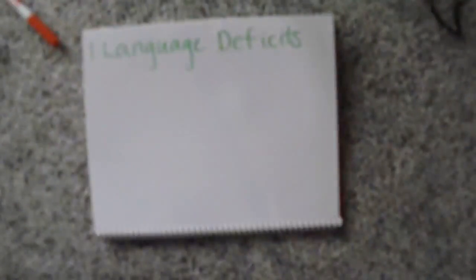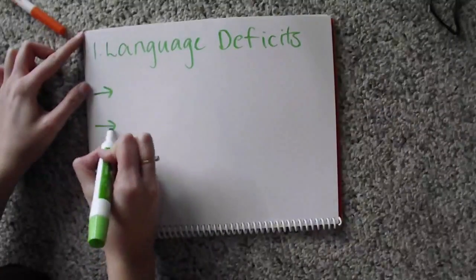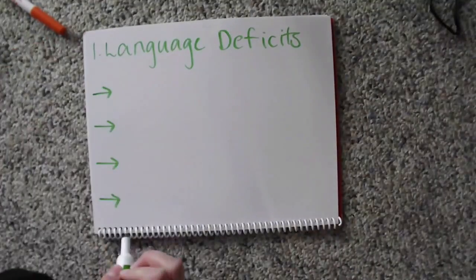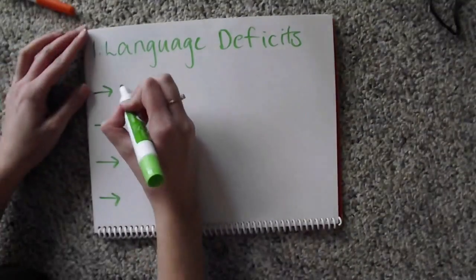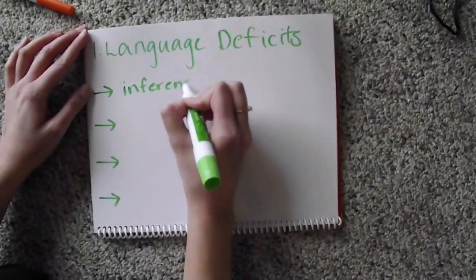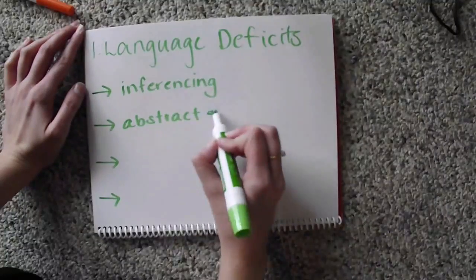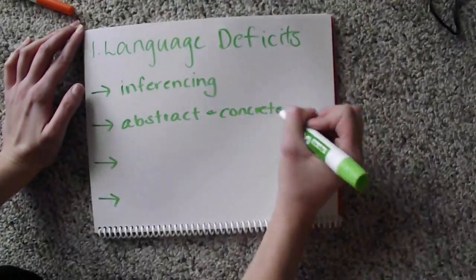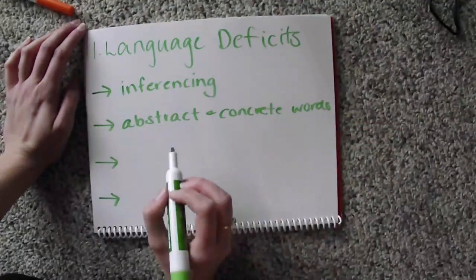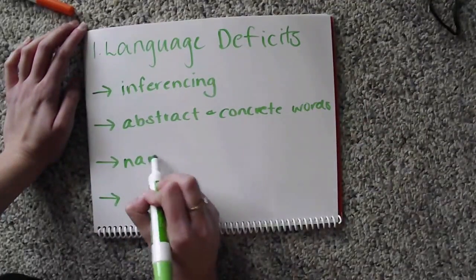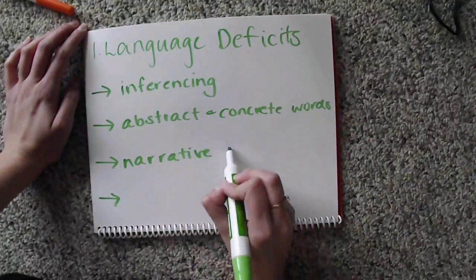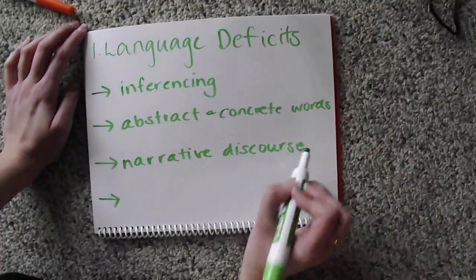Language deficits as a result of RHD can come in many forms. Some of these include difficulties with inferencing, abstract and concrete words, understanding narrative discourse, and pragmatic skills.